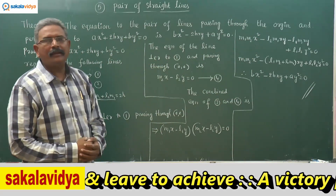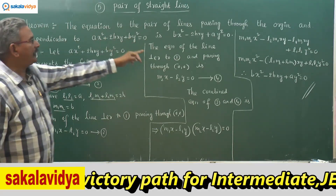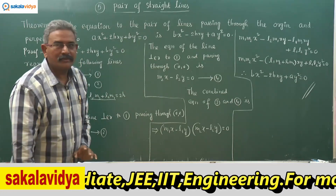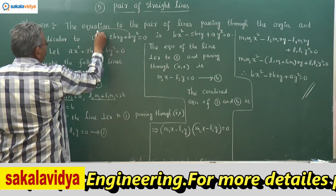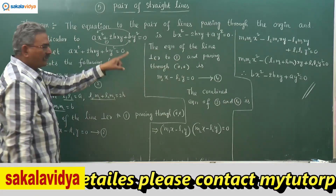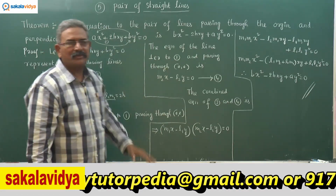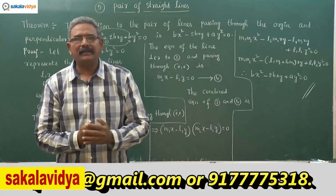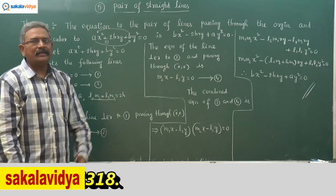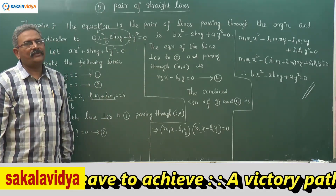This is the required equation. So if you want to find the equation to the pair of lines passing through the origin and perpendicular to ax² + 2hxy + by² = 0, just interchange a and b and change the sign of the middle term from plus to minus. The answer is bx² - 2hxy + ay² = 0. This is a very simple strategy to crack competitive entrance examination problems in mathematics.